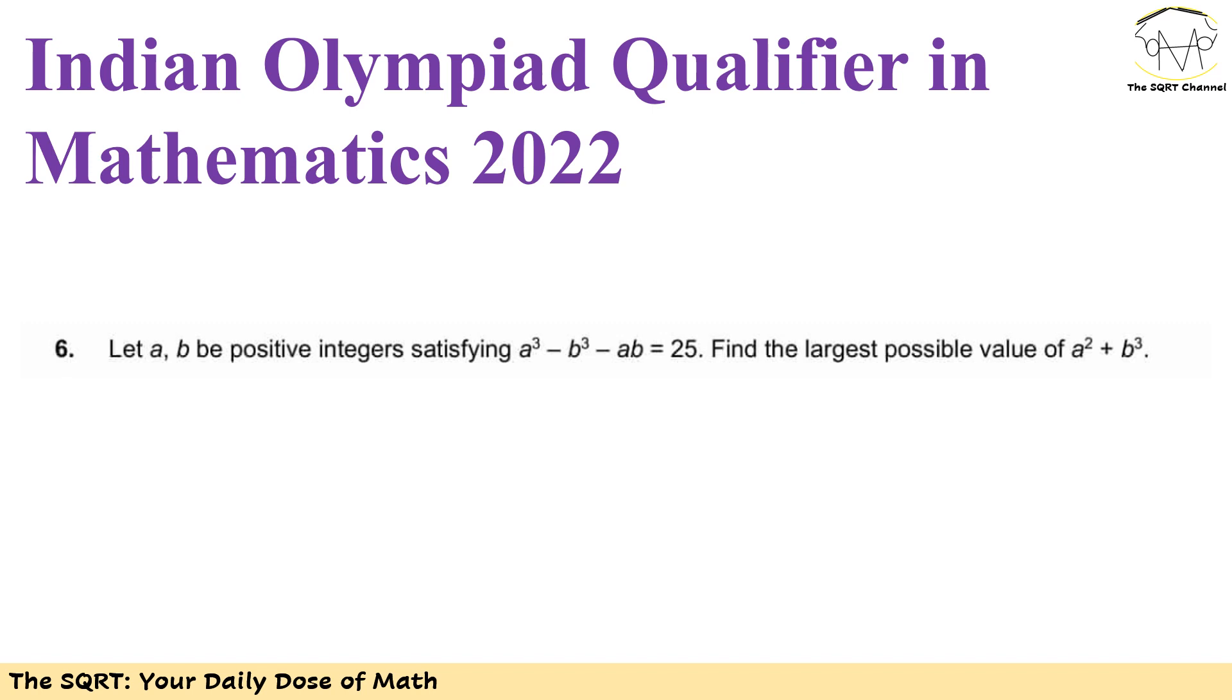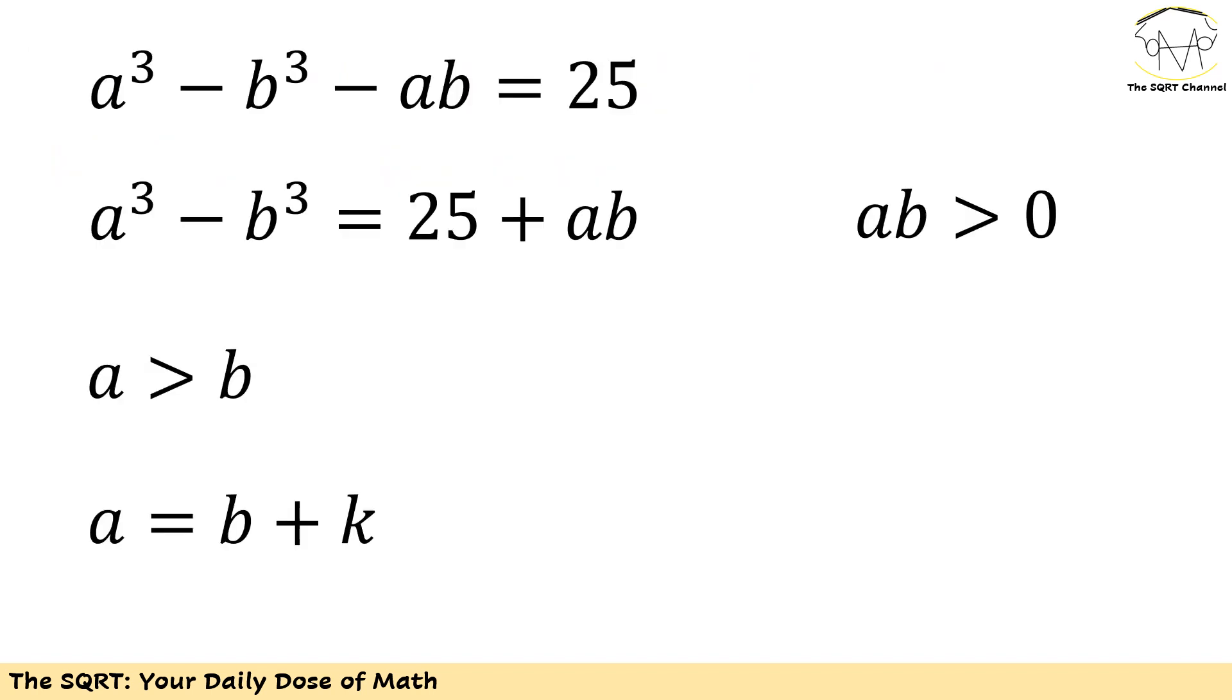Now let's deep dive into the solution. Let's start with the original equation again. a³ minus b³ minus ab is 25. Moving ab to the other side leads to a³ minus b³ is 25 plus ab. Since a and b are positive integers, ab is going to be a positive integer number too. So 25 plus ab is going to be positive which means a³ is greater than b³ or a is greater than b.